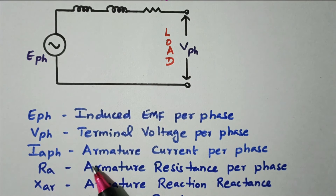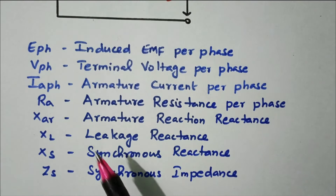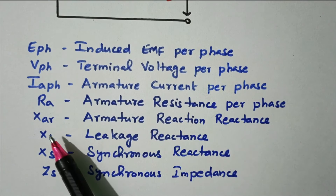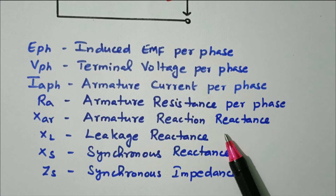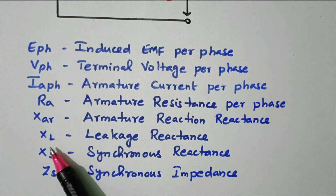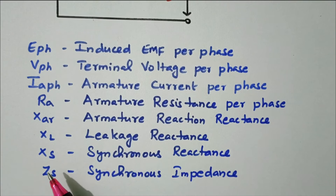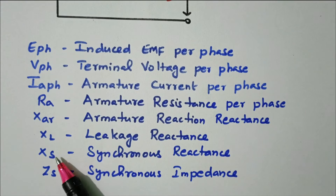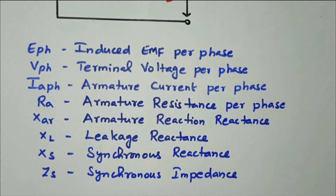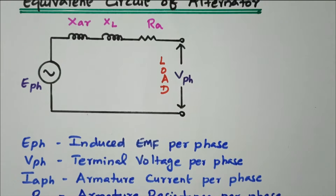IA-phase is the armature current per phase. RA is the armature resistance per phase. XAR is the armature reaction reactance. XL is the leakage reactance. XS — adding XAR and XL gives the synchronous reactance. Then adding XS and RA gives the synchronous impedance. These are all the parameters.